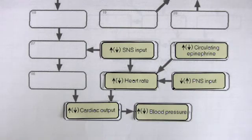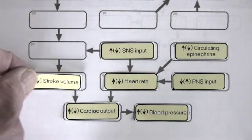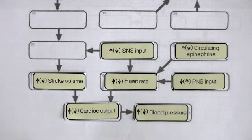The other factor that affects cardiac output is stroke volume. Stroke volume refers to the volume of blood pumped per beat by each ventricle.